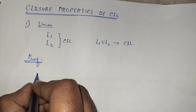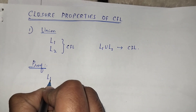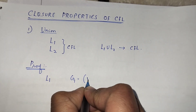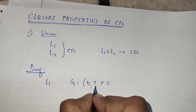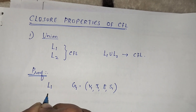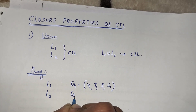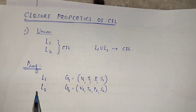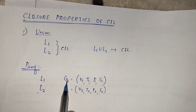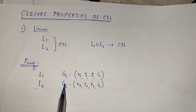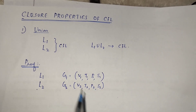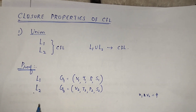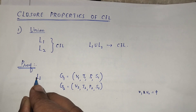We take two context-free languages generated by context-free grammars G1 and G2. L1 is generated by G1, which we represent using the four-tuple (V1, T1, P1, S1). L2 is generated by G2, represented by (V2, T2, P2, S2). We can assume without loss of generality that V1 intersection V2 is equal to null. Union means we are taking either L1 or L2.